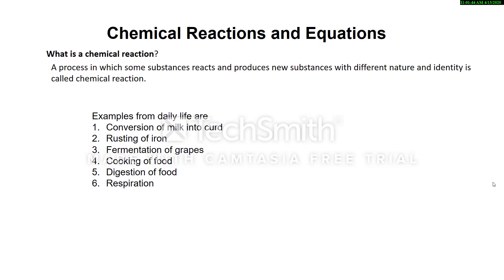Hello, I am Vijay Kumar Sethi and today I am going to discuss Chemical Reactions and Equations, the first chapter of Class 10 Science. In the lower classes we discussed physical changes and chemical changes. Those chemical changes are referred to as chemical reactions. A process in which some substances react and produce new substances with a different nature and identity is called a chemical reaction.